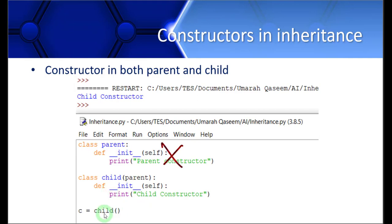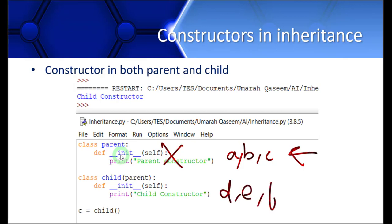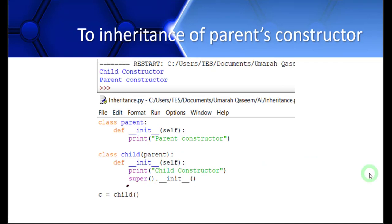The parent constructor is not being called when we create a child class object. Now, what if we need the parent constructor too in our code — maybe some variables like A, B, and C are being assigned there? For that, we add the call super().__init__() in the child class. 'super' refers to the parent class, and with dot init we call the parent constructor. This is how we call the parent constructor from within the child class constructor. The call goes to the child constructor first, and then from the super().__init__() call, it is forwarded to the parent constructor.